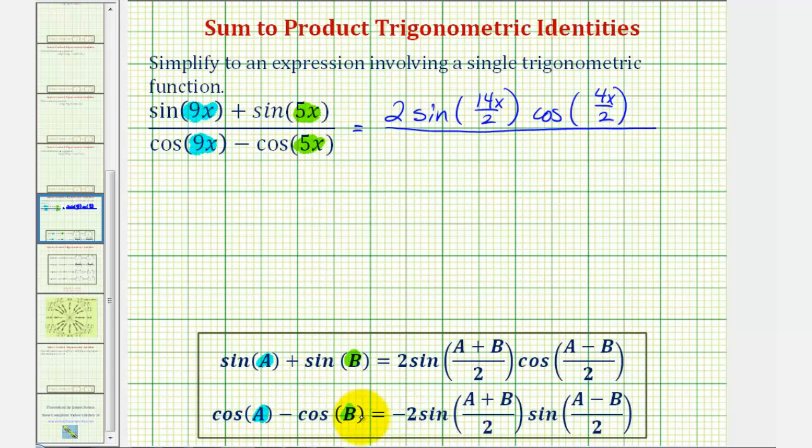So using our second identity, notice how we have negative two sine of (A plus B) divided by two, which again is 9x plus 5x divided by two, or 14x divided by two. And then we have sine of (A minus B) divided by two, which once again will be 4x divided by two.